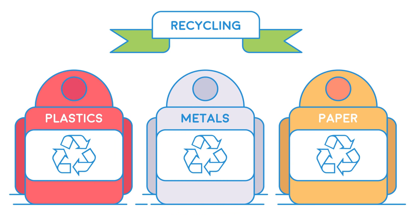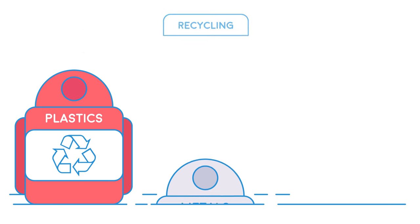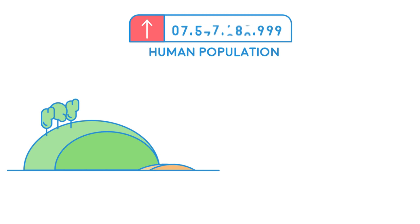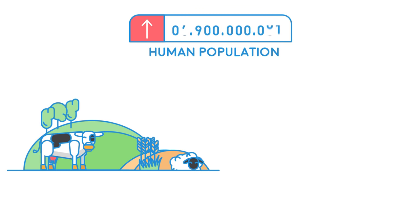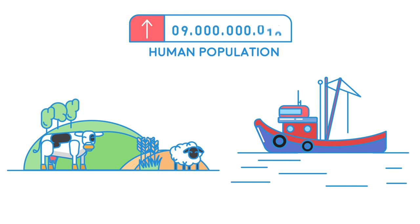Another sustainable life choice is recycling. Recycling plastics, metals, and paper means that fewer resources need to be extracted from the earth, as we can reuse already extracted products — meaning more resources for future generations. As the human population grows, so does the demand for food. There is limited farmland, soil fertility, water, and fish stocks, so we should also be using sustainable ways of growing, catching, and farming food.